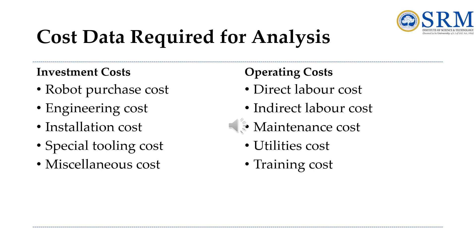Under investment cost, the first item is the robot purchase cost — the basic price of the robot equipped from the manufacturer with the proper options, excluding the end effector. Next is the engineering cost: the cost of planning and designing by engineering staff to install the robot. Then installation cost, which includes the labor and materials needed to prepare the installation site — provision for utilities, floor preparation, etc. Special tooling includes the cost of the end effector, parts positioning, and other fixtures and tools required to operate the work cell. Miscellaneous cost covers additional investment costs not included in the above categories, such as other equipment needed for the cell.